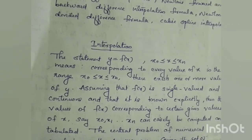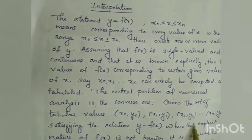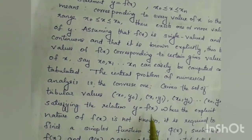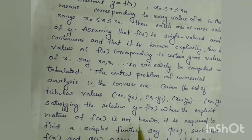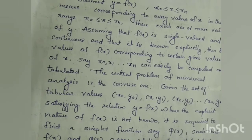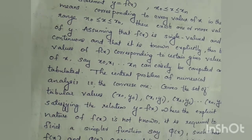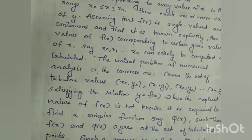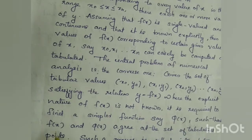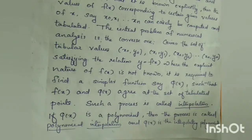Then, given the set of tabular values (x₀, y₀), (x₁, y₁), (x₂, y₂), ... up to (xₙ, yₙ), satisfying the relation y = f(x) where the explicit nature of f(x) is not known, it is required to find a simpler function — say φ(x) — such that f(x) and φ(x) agree at the set of tabulated points. Such a process is called interpolation. If φ(x) is a polynomial, the process is called polynomial interpolation and φ(x) is the interpolating polynomial.